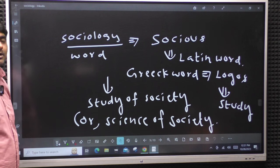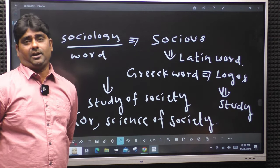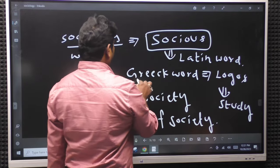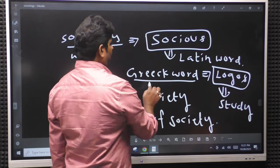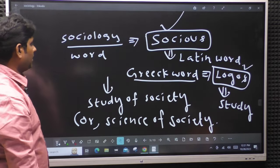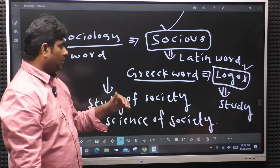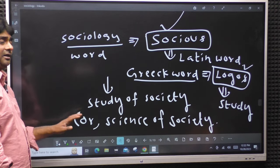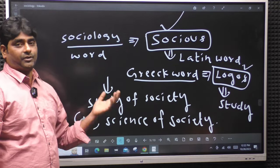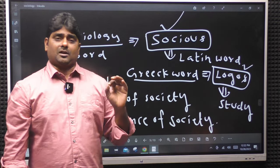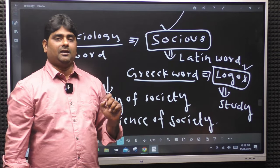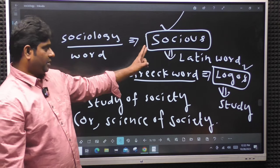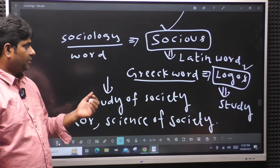What does sociology mean as a word? This is a Latin word - Socius. Socius is the Latin root. And a Greek word is Logos. Socius plus Logos. So the word sociology came from a combination of Latin and Greek: Socius is a word in Latin, and Logos is a word in Greek.